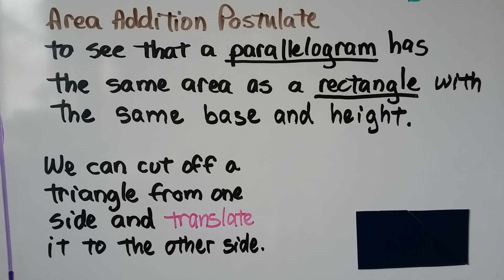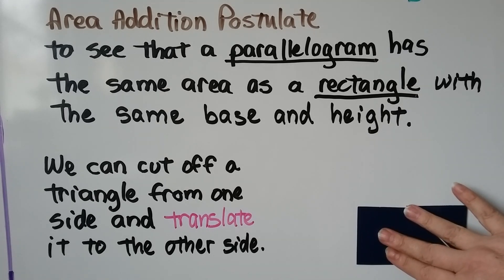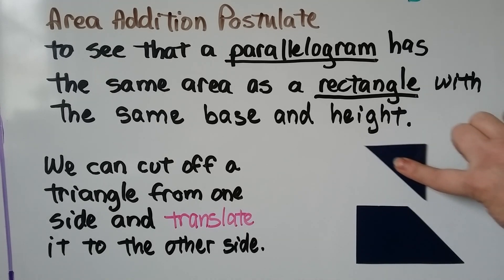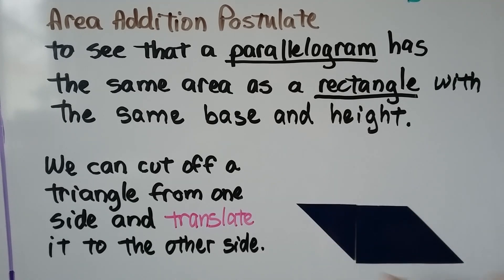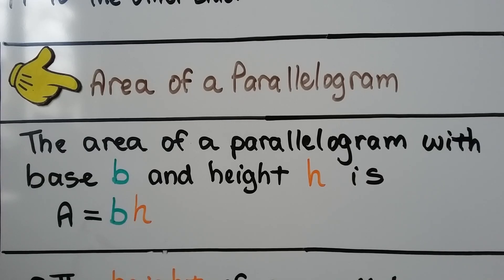We can cut off a triangle from one side and translate it to the other side. So I can take this triangle right here, cut off from one side, and I can just translate it like this to the other side. We have the same area, but now we have a parallelogram.